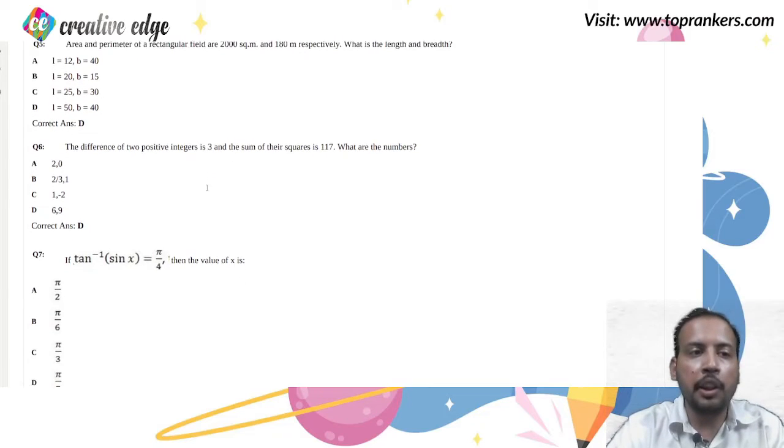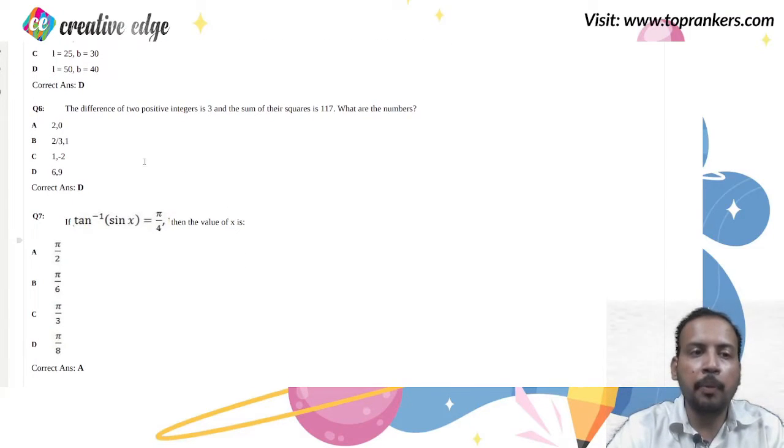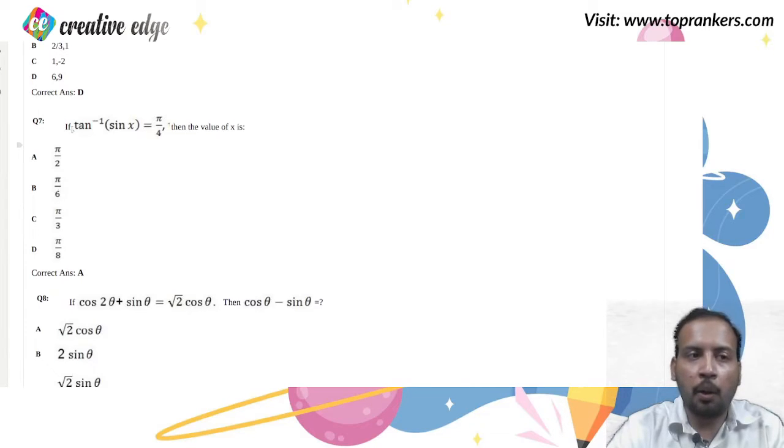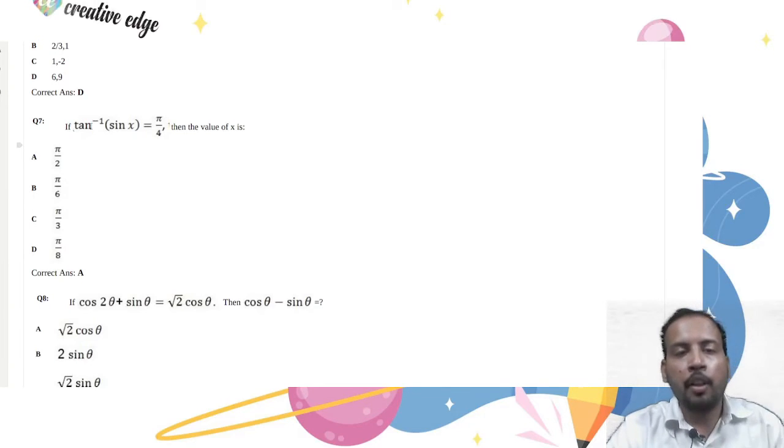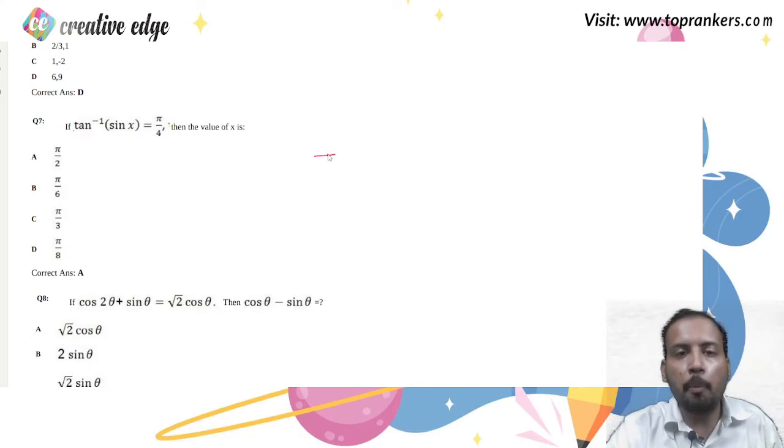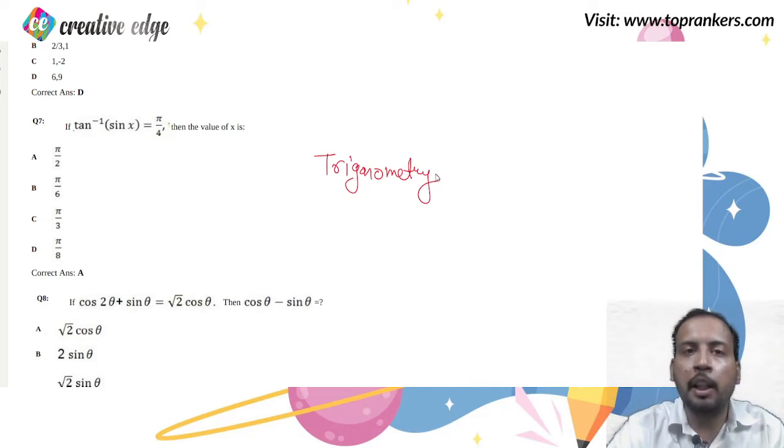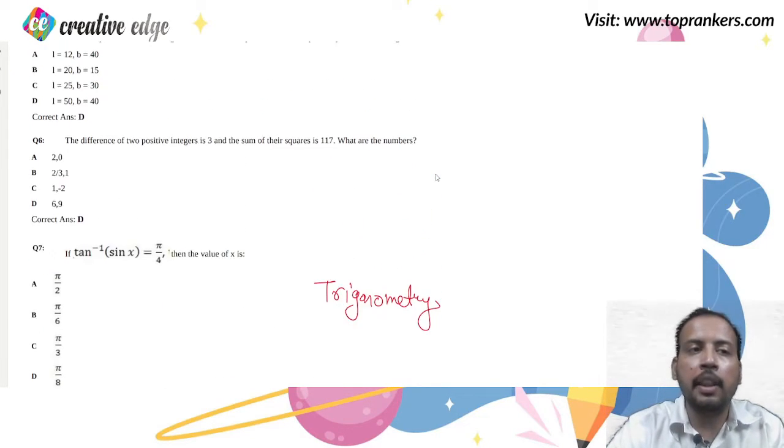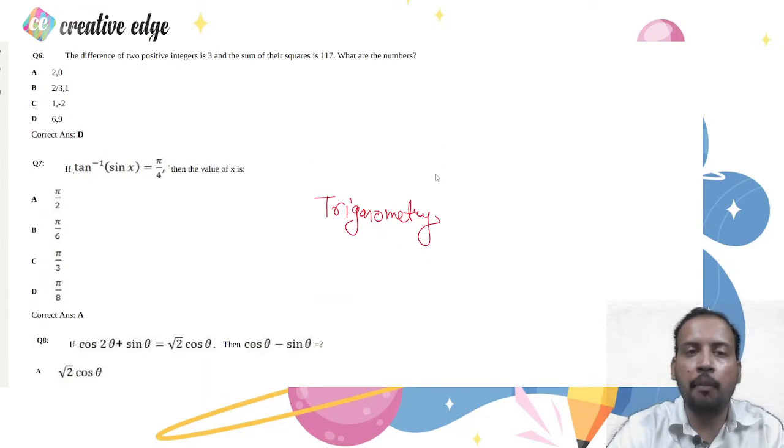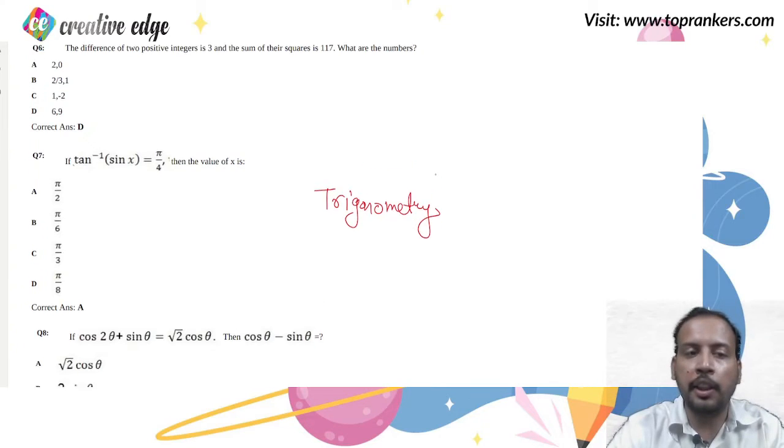The sixth question is from number system, and question number seven is from trigonometry. How many topics have we got as of now? In mathematics, one is arithmetic progression, the second is surface area and volume, the third is number system and the fourth one is trigonometry. The most weightage is given to surface area and volume.